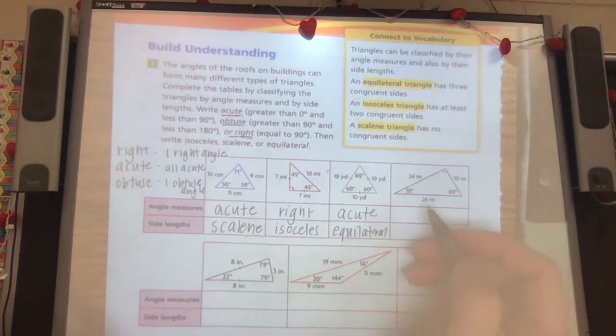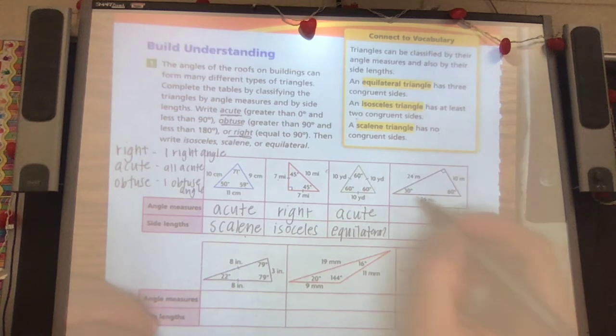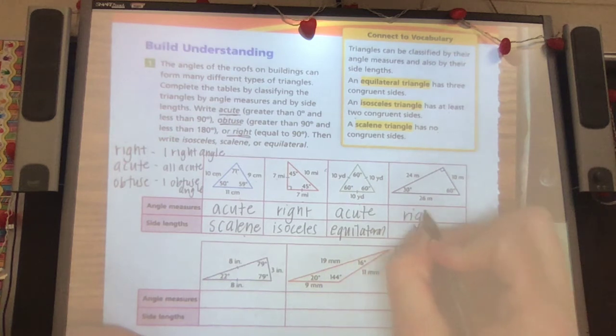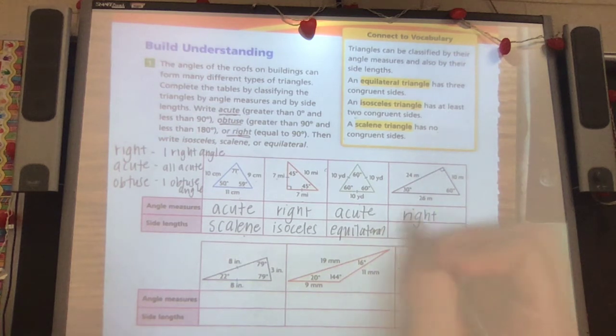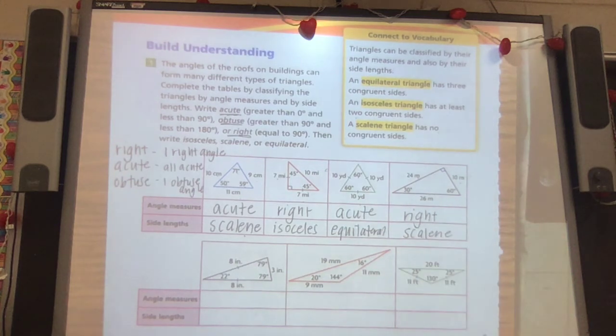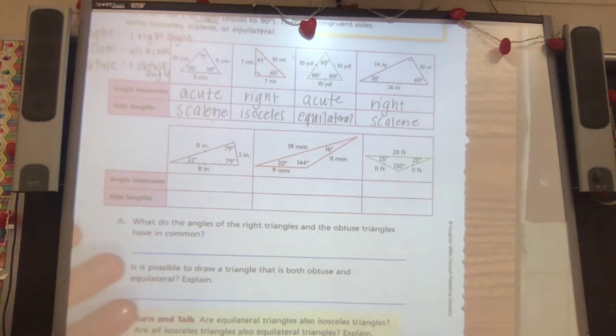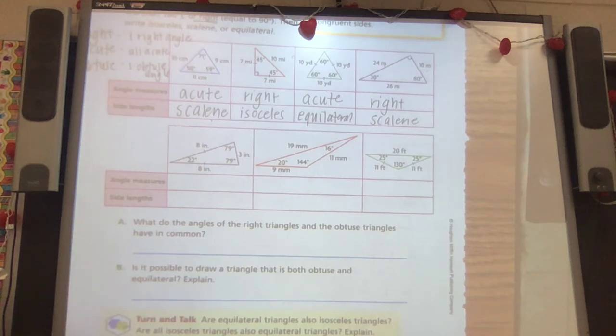And this last one, 30, 90, 60. It didn't tell me 90, but I know that square means 90. So that has to be right. My sides, 24, 10, and 26. So that is scalene. They're all different.